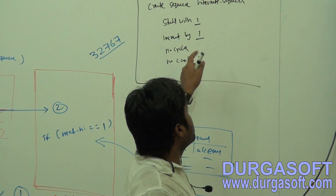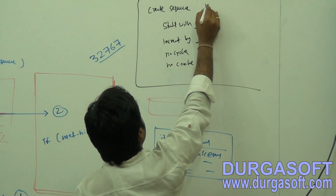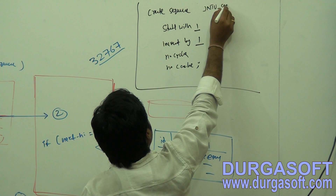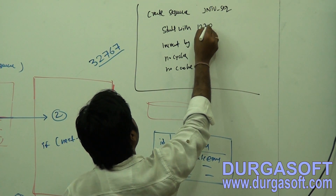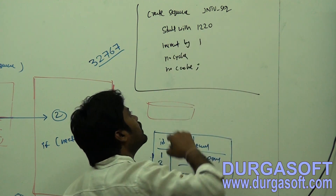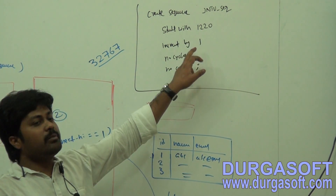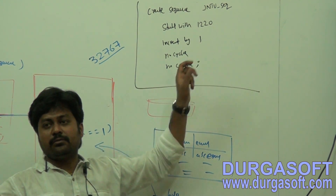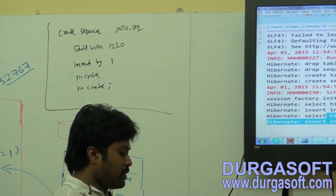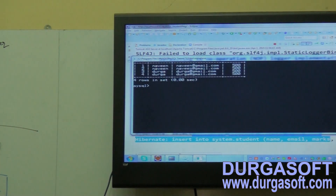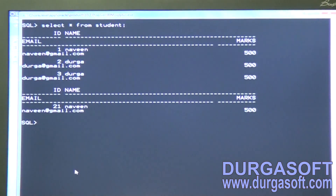In case if you don't want this default sequence and you want to create your own sequence — a JNTU sequence — in that sequence the first number I want to start from 1220, and I want to increment it by one. So from 1220 it will increment by plus one. To use that JNTU sequence, you need to create a custom sequence in your database.